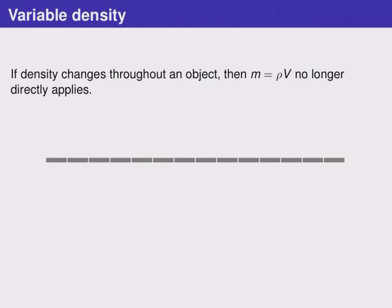So as long as we imagine that each of those pieces is close to having a constant density, we can use the formula m equals rho times V on each of those pieces.